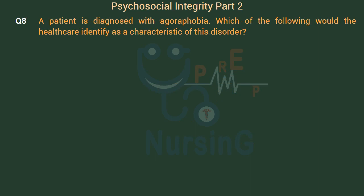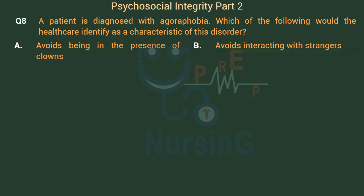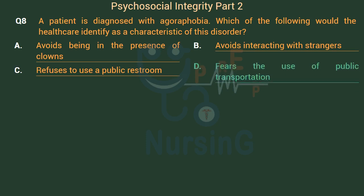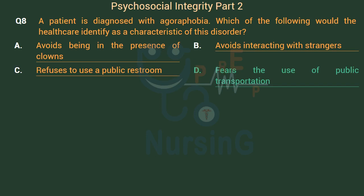A patient is diagnosed with agoraphobia. Which of the following would the healthcare provider identify as a characteristic of this disorder? The right answer is Option D: Fears the use of public transportation.